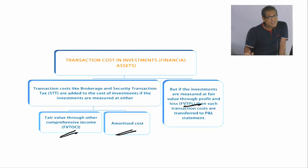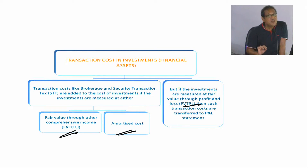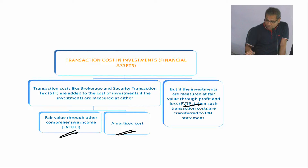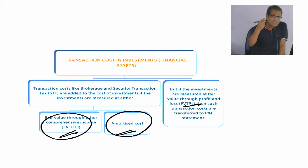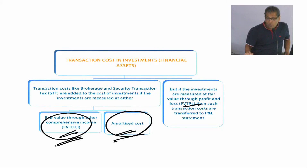The third type is amortized cost. If we acquire any financial asset and at the time of acquisition a transaction cost is incurred — like brokerage, security transaction tax, or any other transaction cost — in the cases of FVTOCI and amortized cost assets, the transaction cost forms part of the cost of the asset. So when we record it for the first time, we add the transaction cost to the acquisition cost: asset acquired plus transaction cost equals total payment. These two types of assets are recognized initially at that total.